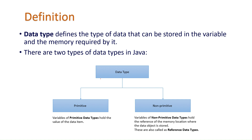There are two types of data types in Java: primitive data types and non-primitive data types. In today's class I will explain only primitive data types. Primitive data types hold the actual values of the data, while non-primitive data types hold the reference of the memory location where the data object is stored, which is why they are also called reference data types.